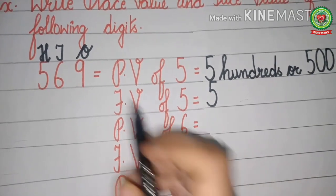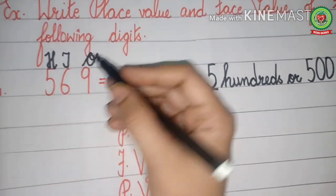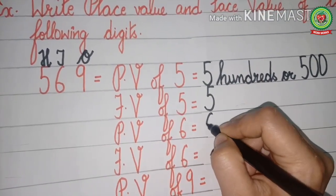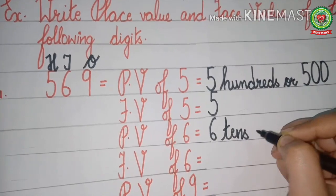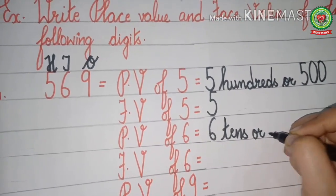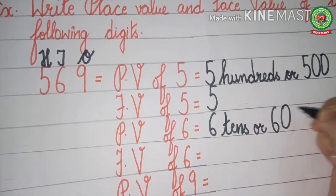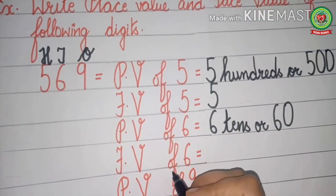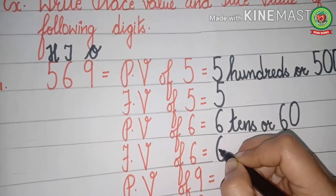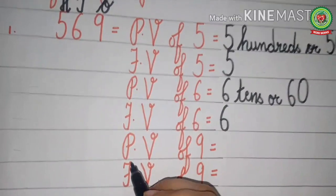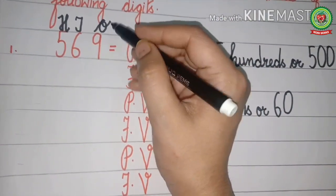Next we write the place value of 6. On which place does 6 stand? Tens is written above 6, so the place value of 6 is six tens. Spell 'tens' — T-E-N-S. Tens has one zero, so we write 60. The face value of 6 is 6. Now the place value of 9 — what is written above 9? Ones.